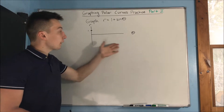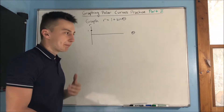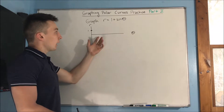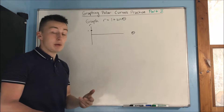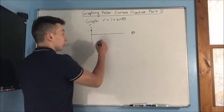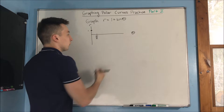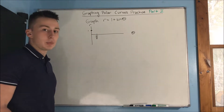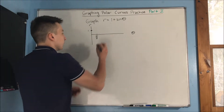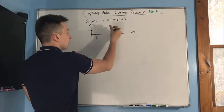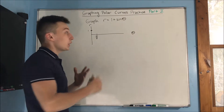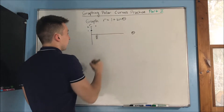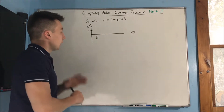Now we need to figure out this interval on the theta axis. Since sine goes up first, we need to figure out where sine is going to be maximized — that's going to be where theta equals pi over 2. So that should be our next tick point. The pi over 2 point is just going to be 1 plus sine of pi over 2, which is just 1, so we end up with 2 at pi over 2.